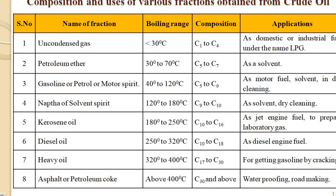Looking at the composition in the fractionating column: uncondensed gas, mainly methane, is used in LPG as industrial or domestic fuel. Petrolimeter is used as a solvent in the dry cleaning industry. Gasoline or motor spirit or petrol is obtained at around 40 to 120 degrees centigrade, consisting of C5 to C9 carbons, and is widely used as a solvent and motor fuel. Naphtha or solvent spirit is obtained around 120 to 180 degrees centigrade with 9 to 10 carbons, also used as a dry cleaning agent.